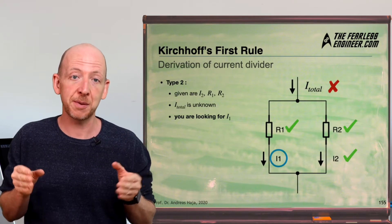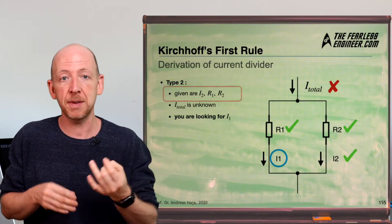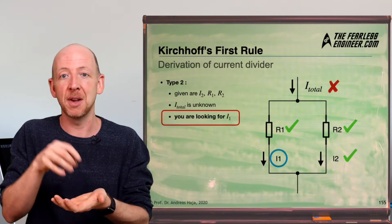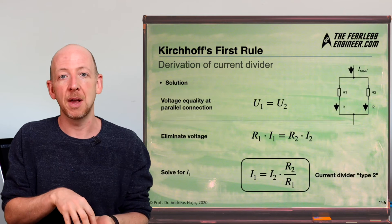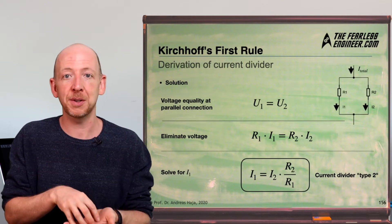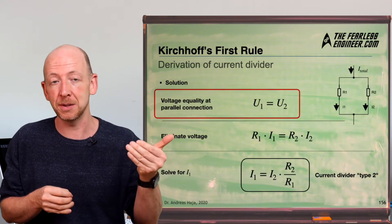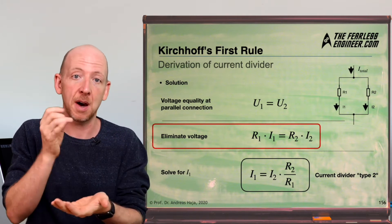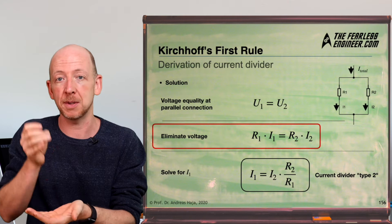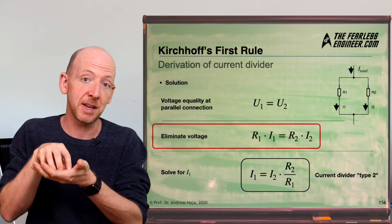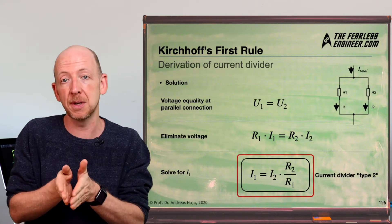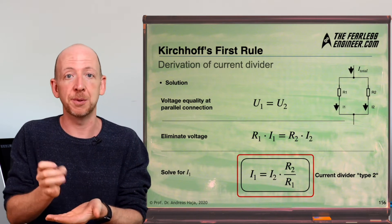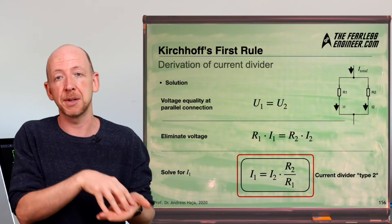In the second version of the current divider, we assume we know partial current I2 and both resistors, and want to find partial current I1. Using voltage equality again, we equate U1 with U2 and apply Ohm's law to get R1 × I1 = R2 × I2. This transforms easily to I1 = (R2 / R1) × I2, which is the second form of the current divider.